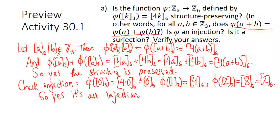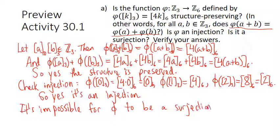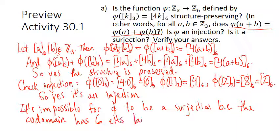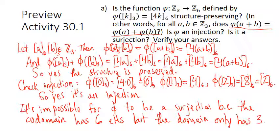However, is it surjective? It's actually impossible for it to be a surjection because the codomain has six elements but the domain only has three — you can't possibly map to all six elements from three. So it's not surjective.